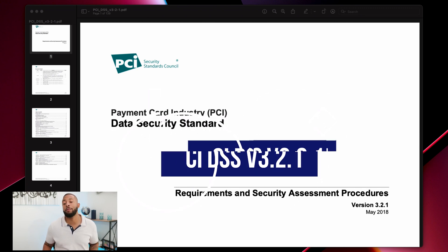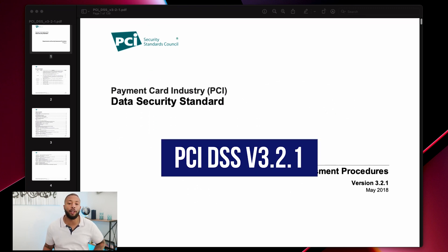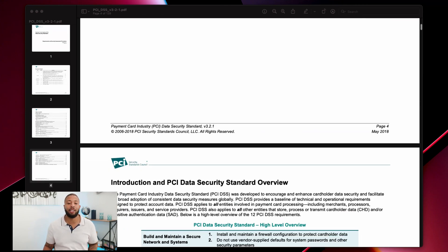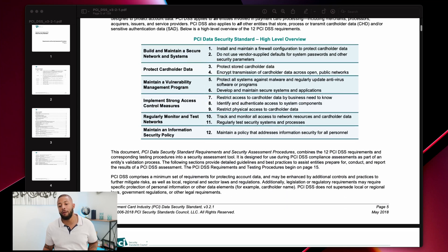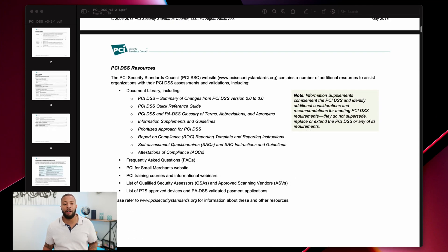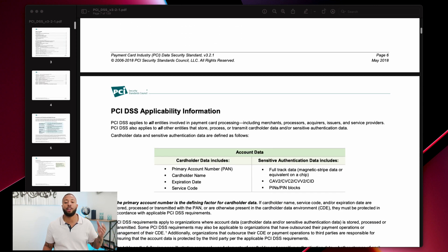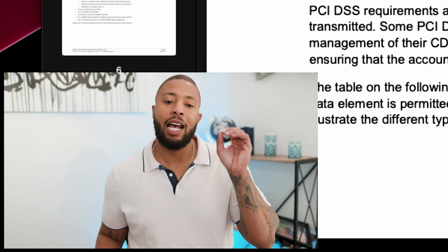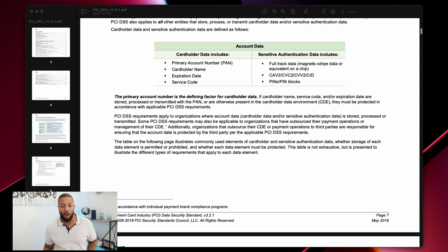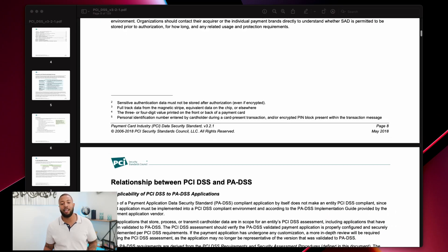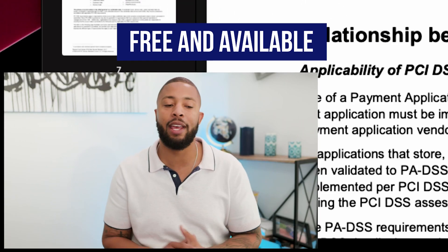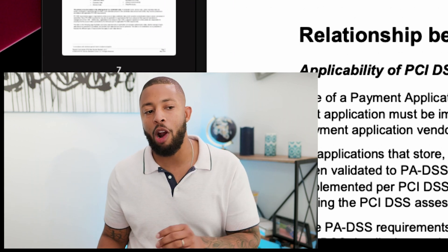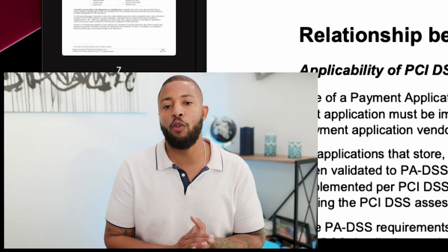I have downloaded PCI DSS version 3.2.1. This is a 200-plus-page document that has all of the applicable controls that companies need to follow if they store, process, or transmit credit card data. I'm going to walk through a couple of requirements as if I was performing a security assessment, because there are a few different types of roles when it comes to PCI.